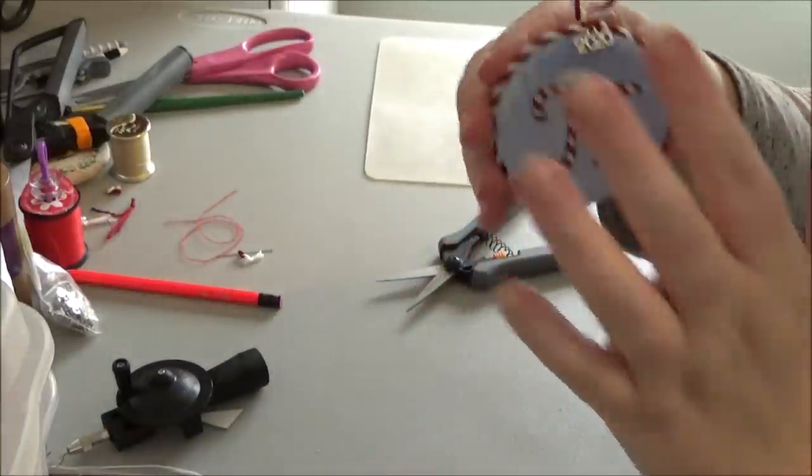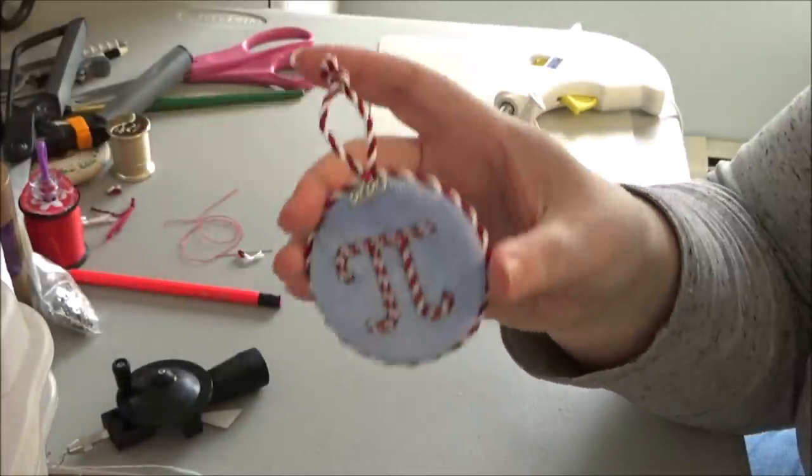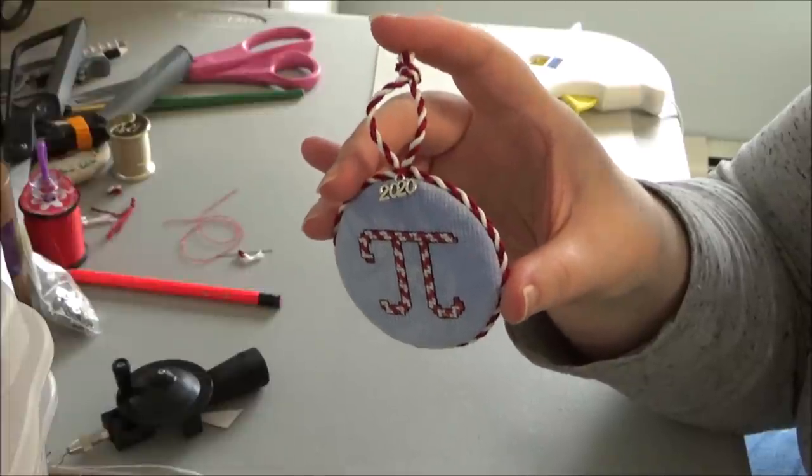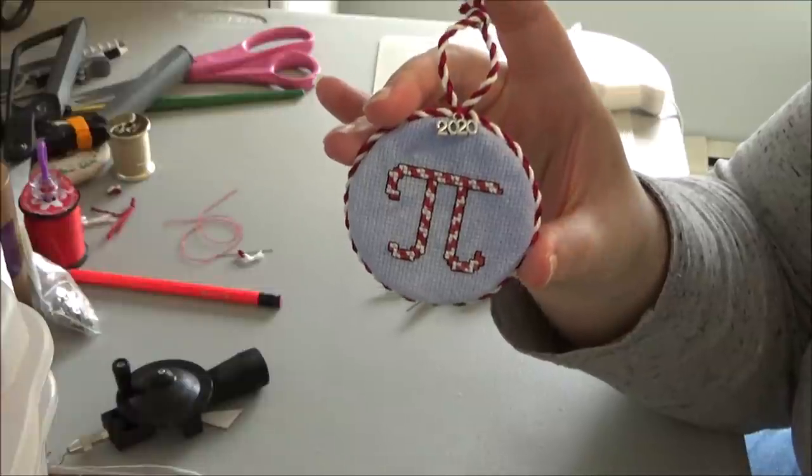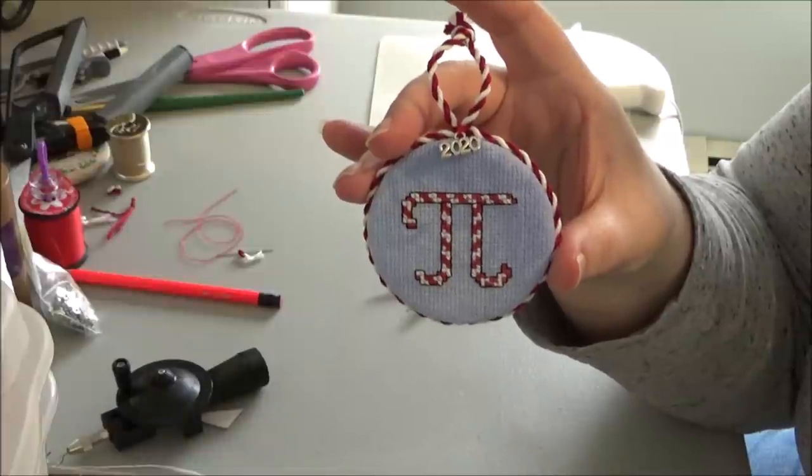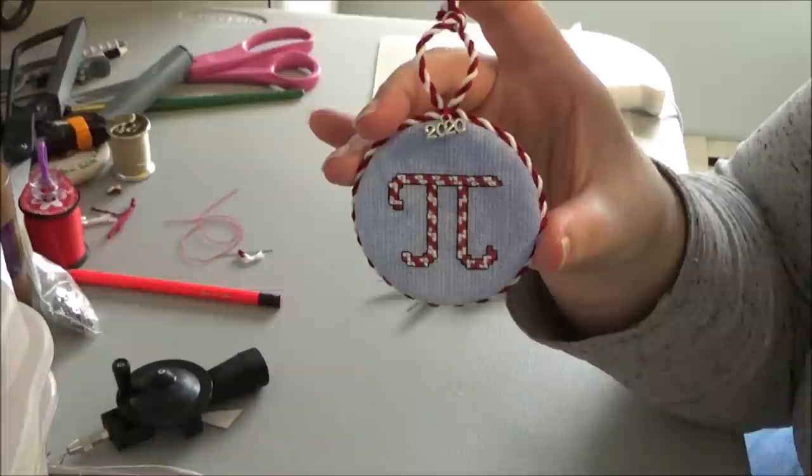So that is it. A round ornament with cording. I hope this was helpful. I'll put those links down below. I can put links to the Amazon charms as well. Or if you just search 2020 charm or 2021 charm, you'll get like a thousand options to pop right up. So thank you so much. Bye.